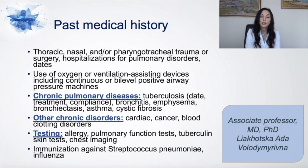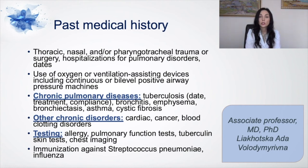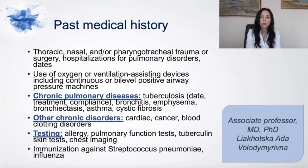You should also ask about past medical history. Ask if the patient has had thoracic, nasal, or pharyngotracheal trauma or surgery. If the patient uses oxygen or ventilation assistance devices. If the patient has chronic pulmonary diseases such as tuberculosis, bronchitis, emphysema. Other chronic diseases, including cardiovascular diseases or cancer. Testing: allergy testing, pulmonary function test, tuberculin skin test, chest X-ray. Immunization against pneumococcal pneumonia and influenza.